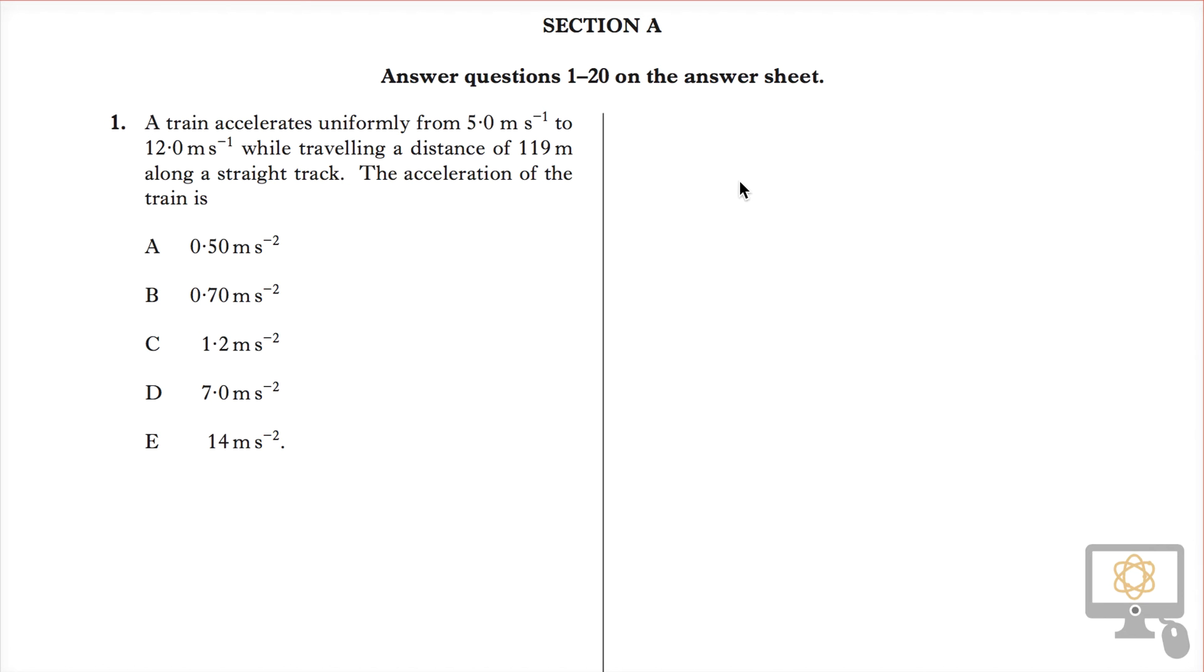In question number one of the multiple choice section A from the 2013 revised Higher Physics paper, it states that a train accelerates uniformly from 5 meters per second to 12 meters per second. So we've got 5 meters per second as our initial velocity and 12 meters per second as the final velocity, while traveling a distance of 119 meters along a straight track. So that's our displacement s, and we need to find the acceleration of the train.